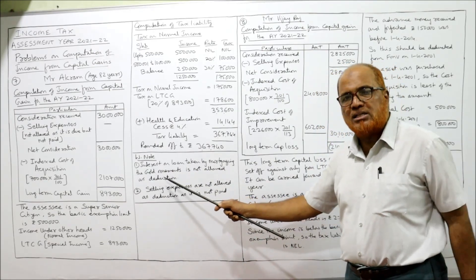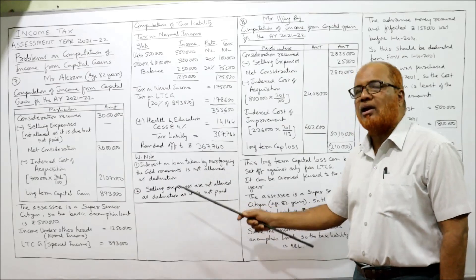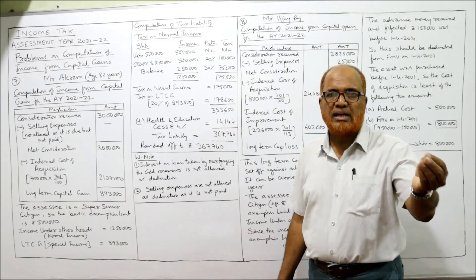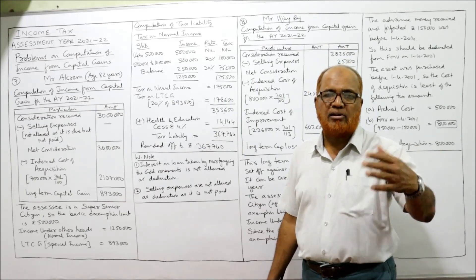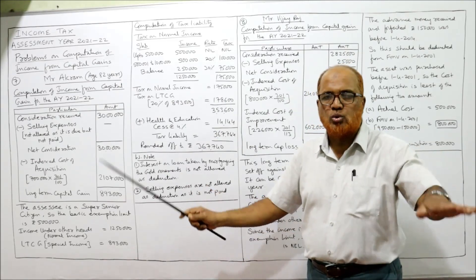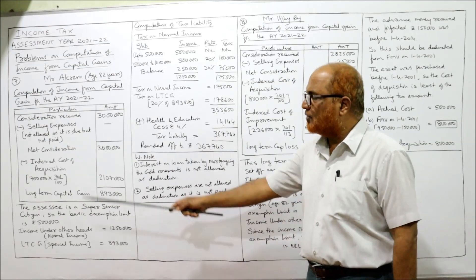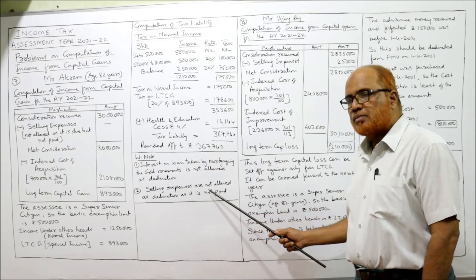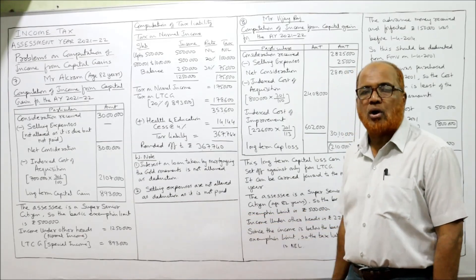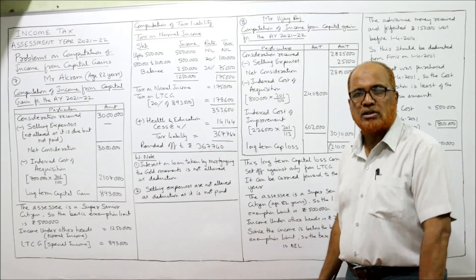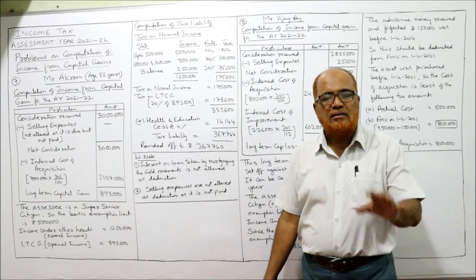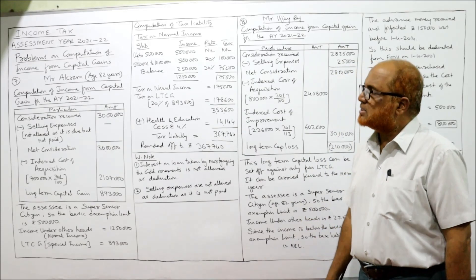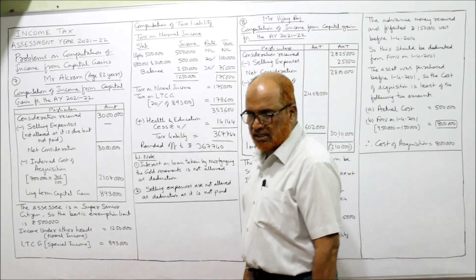Working notes for problem 7: First, interest on loan taken by mortgaging the gold ornaments is not allowed as a reduction — deduction is given only for indexed cost of acquisition. Second, selling expenses are not allowed as a deduction as they are not paid. If selling expenses are paid, then only they will be allowed. This is the end of problem number 7.